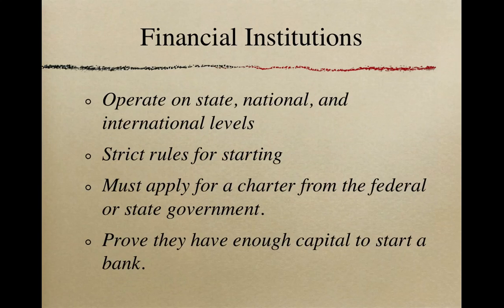Banks operate on state, national, and international levels. There are strict rules for starting one because banks handle large amounts of money. To open a federal or a state bank in the United States, the owners have to meet special requirements. They must also apply for a charter from the federal or state government. The owner needs to prove that they have enough capital or money to start a bank. In the United States, there are three main types of banks.